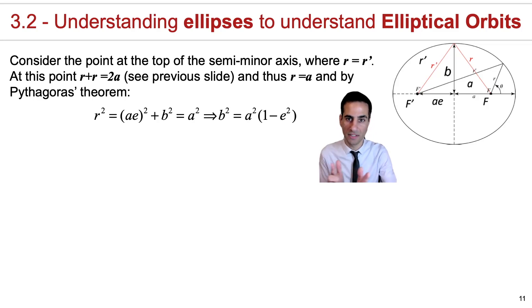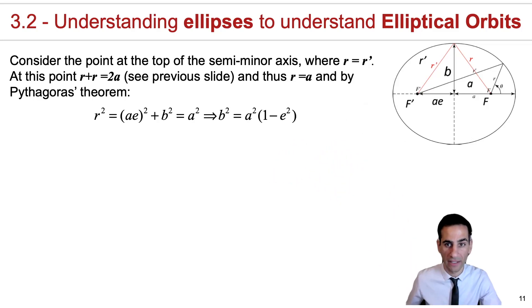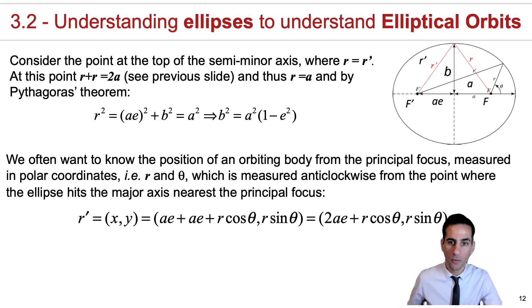At that specific point, r prime equals r, which means 2r equals 2a, and therefore r at that point equals the semi-major axis a. We can also see some simple geometrical conditions that you could derive for this, which may come in handy to deal with the eccentricity and the relations between the semi-major axis and the semi-minor axis.